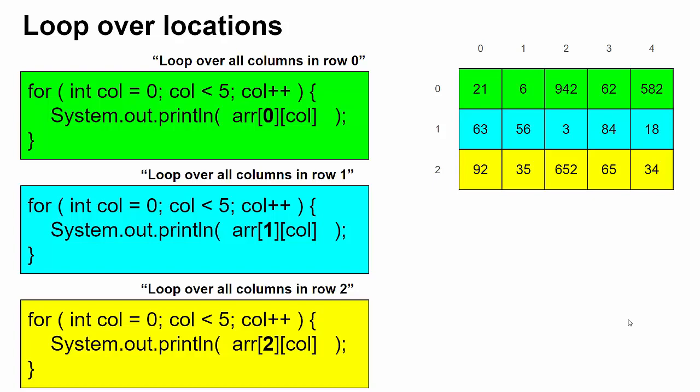The problem is we don't want to have to have a separate loop for each row we want to display. And also right now we're using println, which means that each value, like we're looking at them horizontally, 21, 6, 942. But if we actually printed them, each value would print on a new line in the console, because once you do a println, it moves down and then displays the next one.